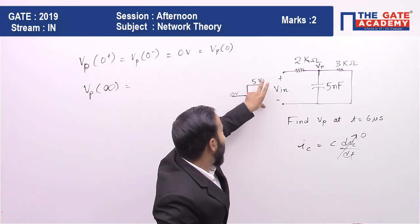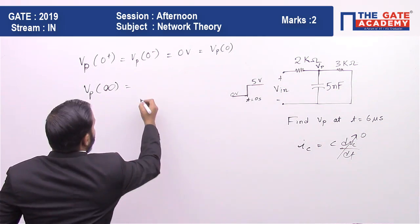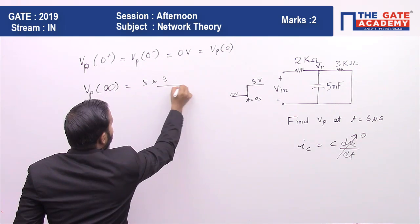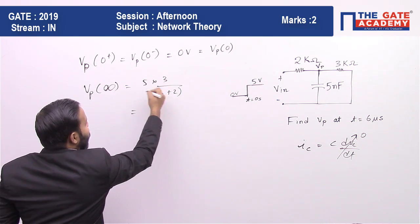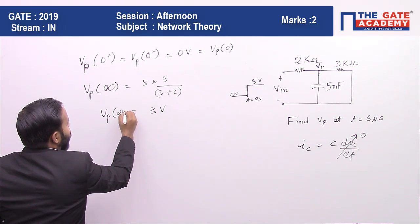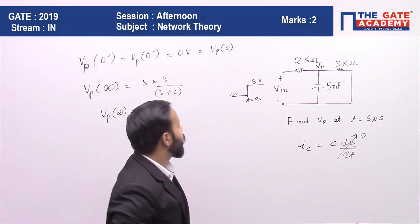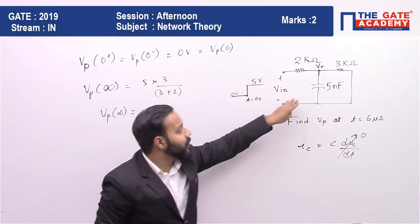That is 5 volt times 3 divided by 3 plus 2. Five times 3 by 3 plus 2, which is 5, so 5 cancels and we get 3 volt. So vp(∞) or vp final is 3 volt, and vp(0) is 0 volt.